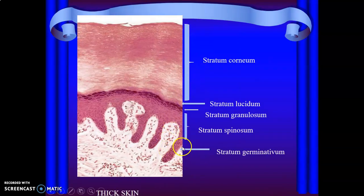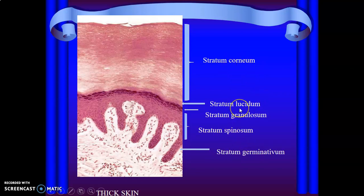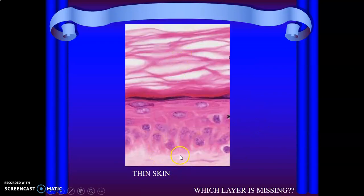This is the epidermis of the skin and this is the dermis. The epidermis has ridges that interdigitate with dermal papillae. Remember lucidum is only in thick skin — palmar and plantar. In corneum and lucidum there are no organelles and no nuclei in the keratinocytes. Spinosum and germinativum are highly mitotic. The most superficial layer with nuclei is the granulosum. In thin skin there is no lucidum layer.